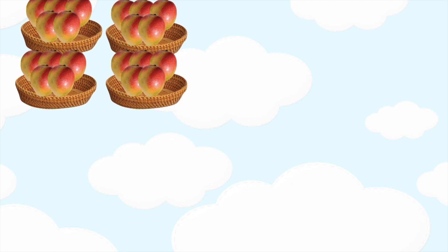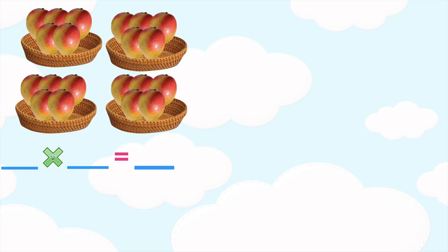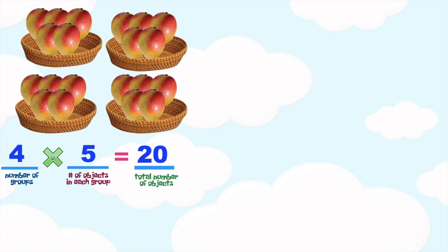Now let's write the multiplication sentence of this next illustration. The first factor — the number of groups — is four. The second factor — the number of objects in each group — is five. The total number of objects is 20. So we have 4 times 5 is equal to 20.